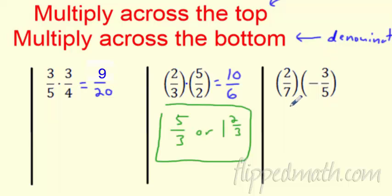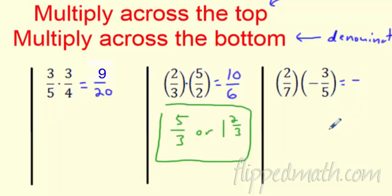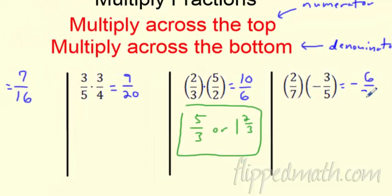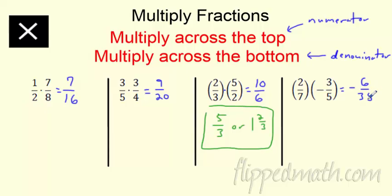Now the finale — I may mix in some signs here. Is the answer positive or negative? Right off the bat, I say: what is my answer going to be? I have a positive times a negative, so my answer has to be negative — go ahead and fill that in. Then do your regular multiplication: two times three is six, and on the bottom seven times five is 35. It's not going to reduce, so there's the answer.